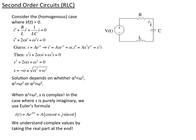Now we go on to consider the homogeneous case with the resistor, where V is still 0. To make life a little easier, we replace the coefficients: 1/(LC) becomes ω₀², and R/L becomes 2α, so 2α = R/L.